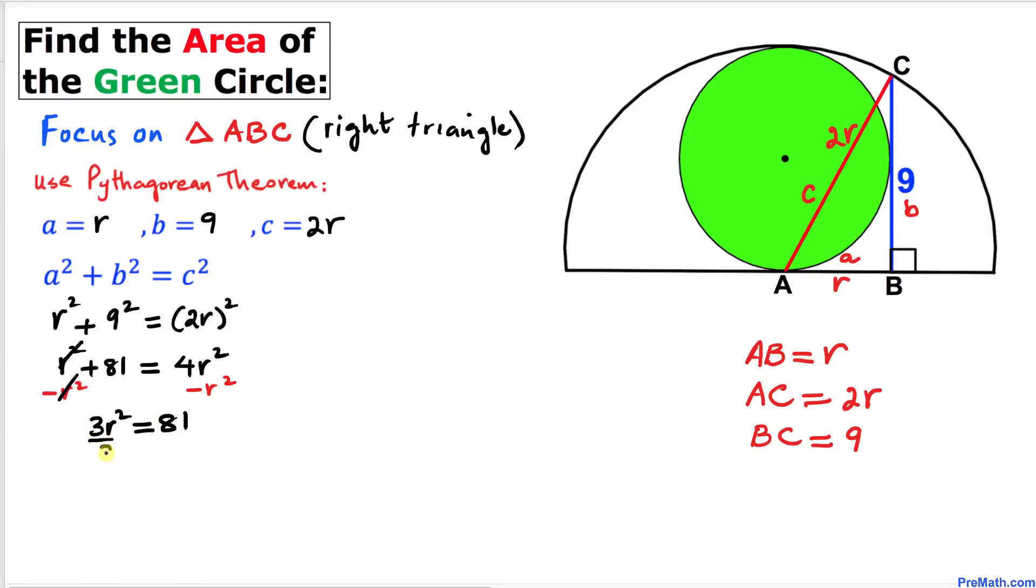Let's divide both sides by 3, so that means our r² turns out to be 27.